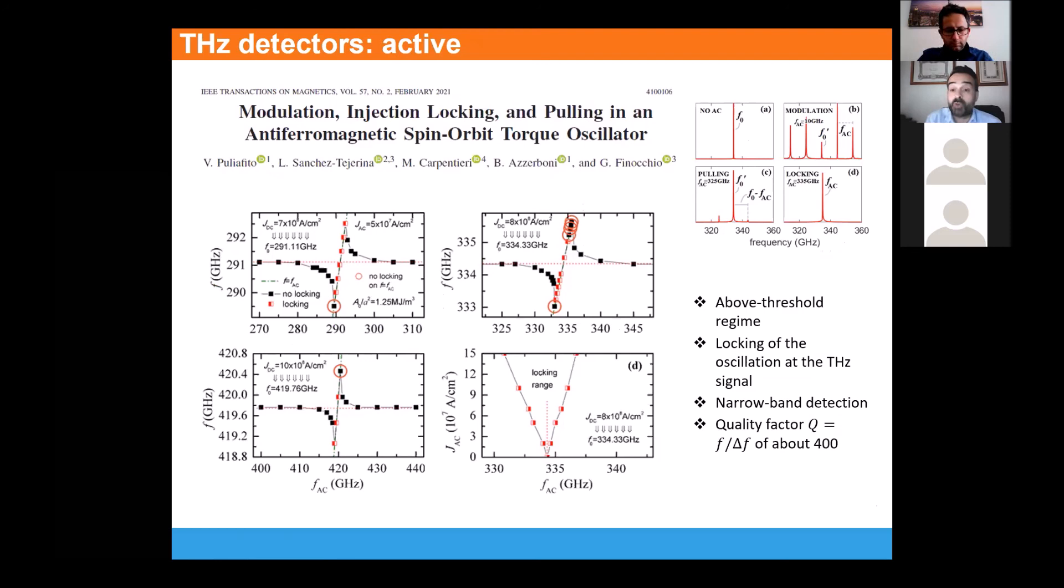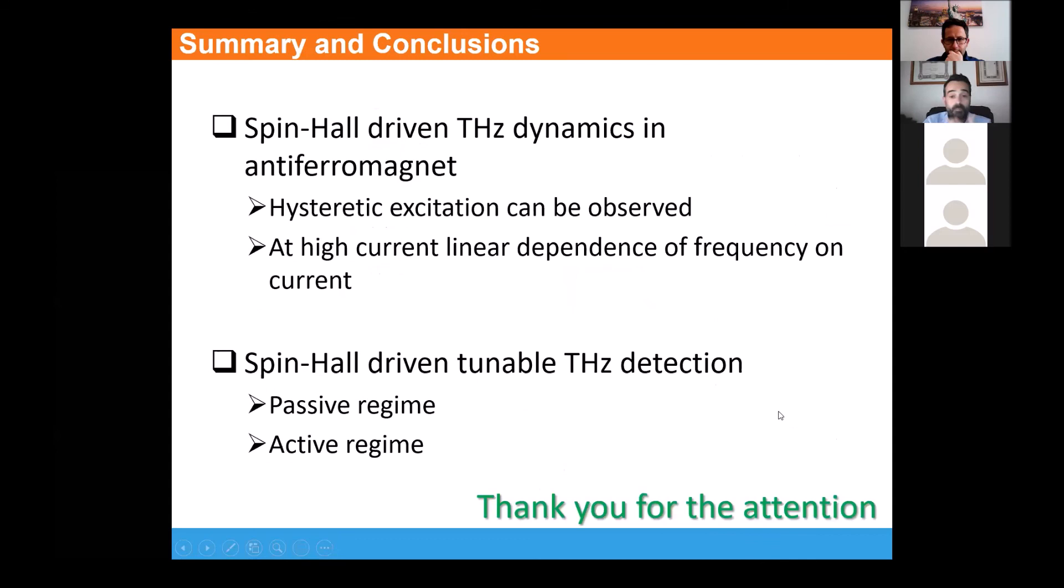If we want to get a narrower band detection, we can exploit the narrow linewidth of the oscillation obtained at large current. So in the above-threshold regime, and in fact a few months ago we published this paper where we studied the different configurations of our oscillator where we got some modulation, pulling, and in particular locking. In these three cases of DC current above threshold current, we observed the locking of the oscillation at the terahertz signal, with a narrow band detection and a larger quality factor of about 400. So basically we also expect a larger sensitivity in the active regime as it occurs in similar ferromagnetic detectors. This is basically my summary and very short summary, I would say, and conclusion. Thank you for the attention.